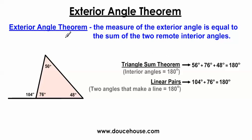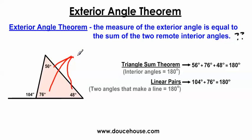The measure of the exterior angle is equal to the sum of the two remote interior angles. If I were to look at just the interior angles of the triangle, these angles have to equal 180 degrees every time, because that's the triangle sum theorem. If I add 56 plus 76 plus 48, all these angles combined equal 180 degrees.